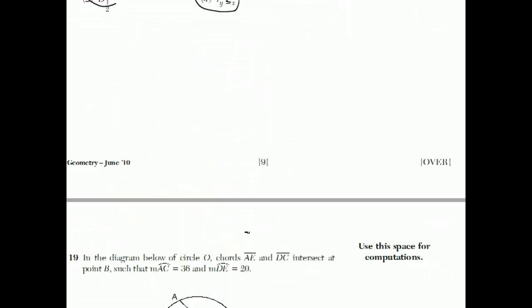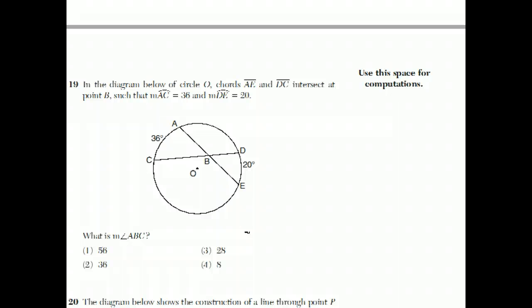Moving on to question 19. In the diagram below of circle O, chords AE and TC intersect at point B, such as the measure of arc AC is 36 degrees and the measure of DE is 20. And they want to know how big is this angle right here. Well, there's a rule for this. The rule is, to find the measure of the angle, if you know these two arcs, you take the average of the two intercepted arcs. So 36 plus 20 is 56 divided by 2 is 28 degrees, which is the answer. Choice three.